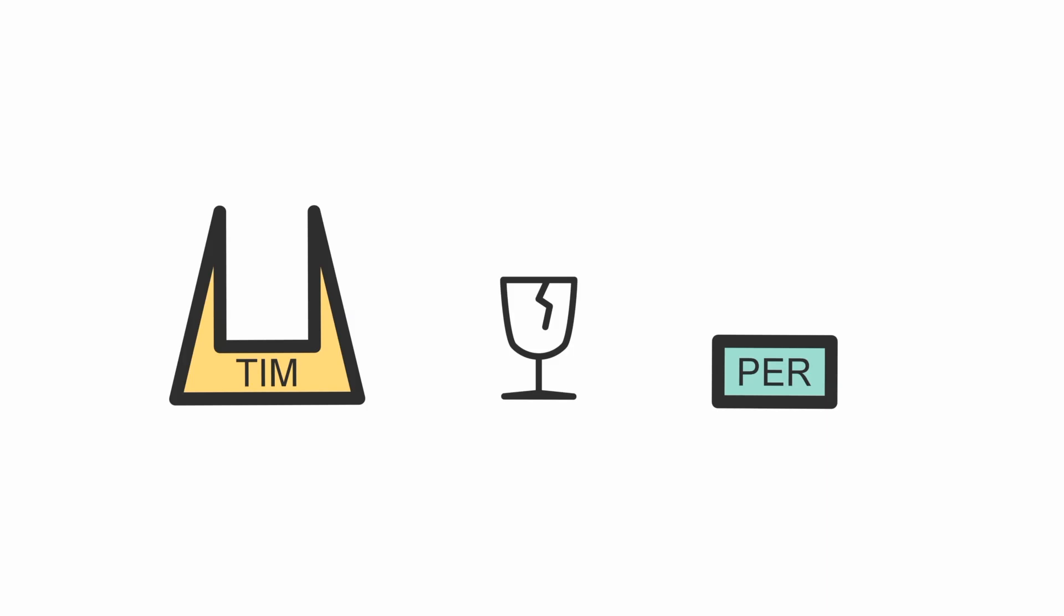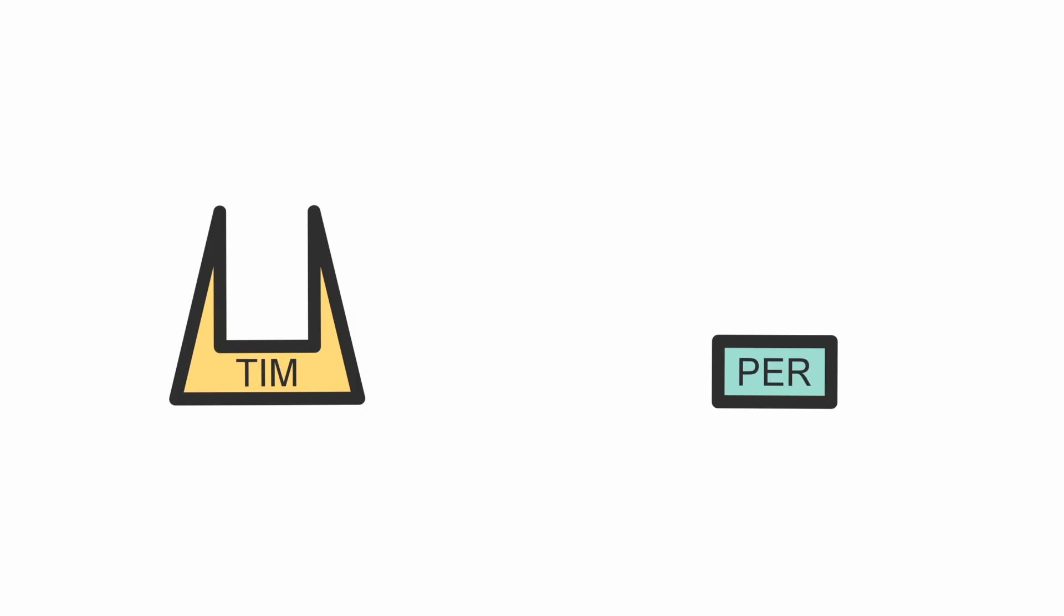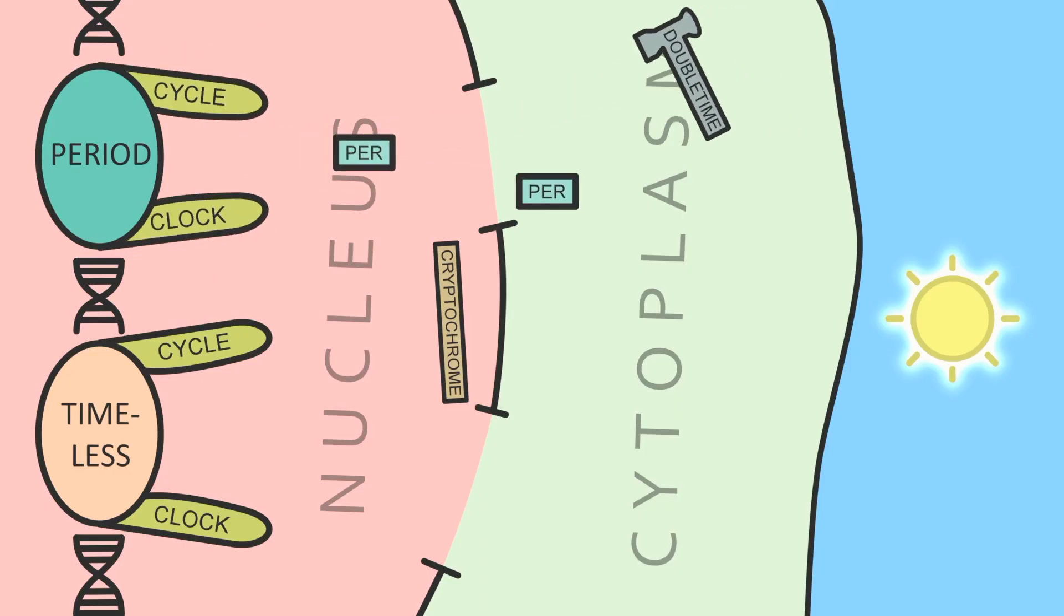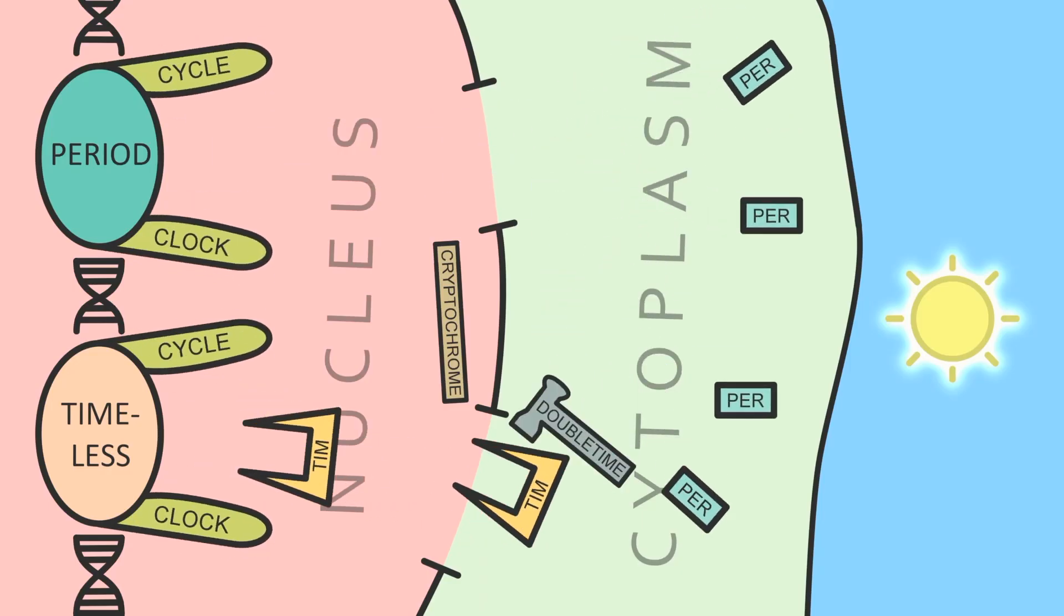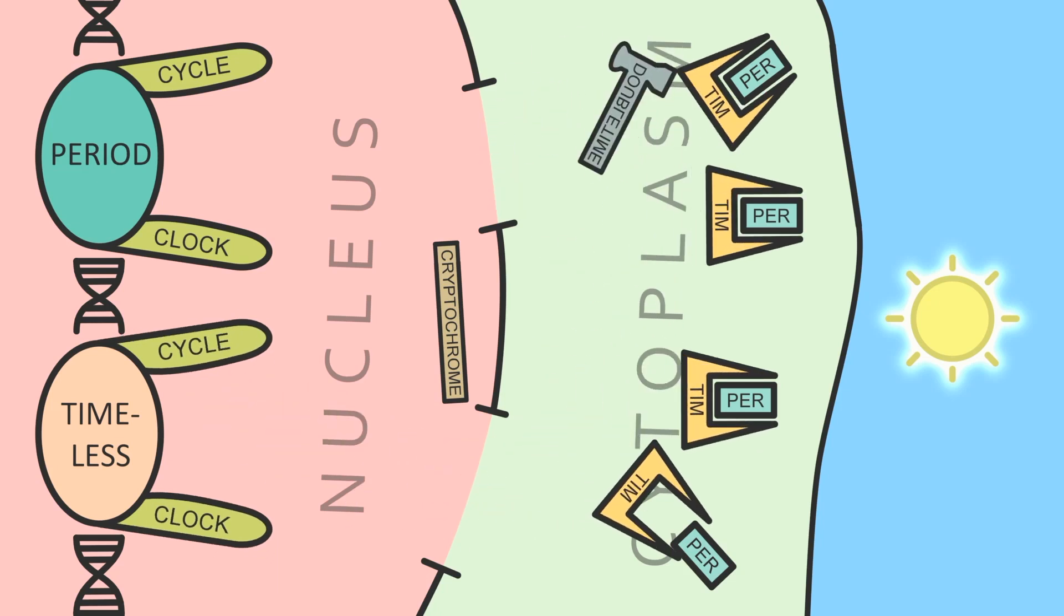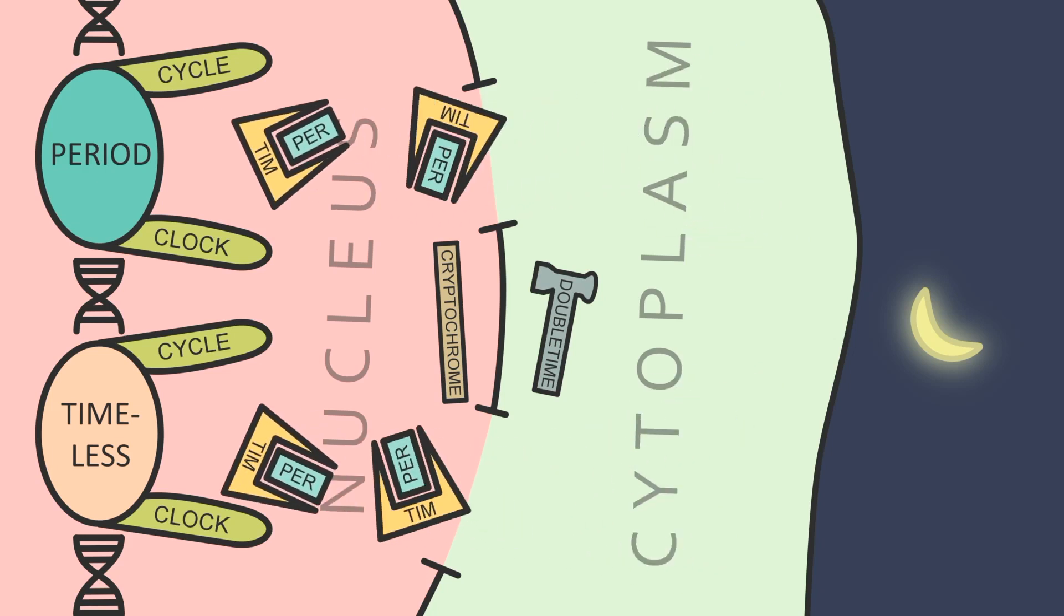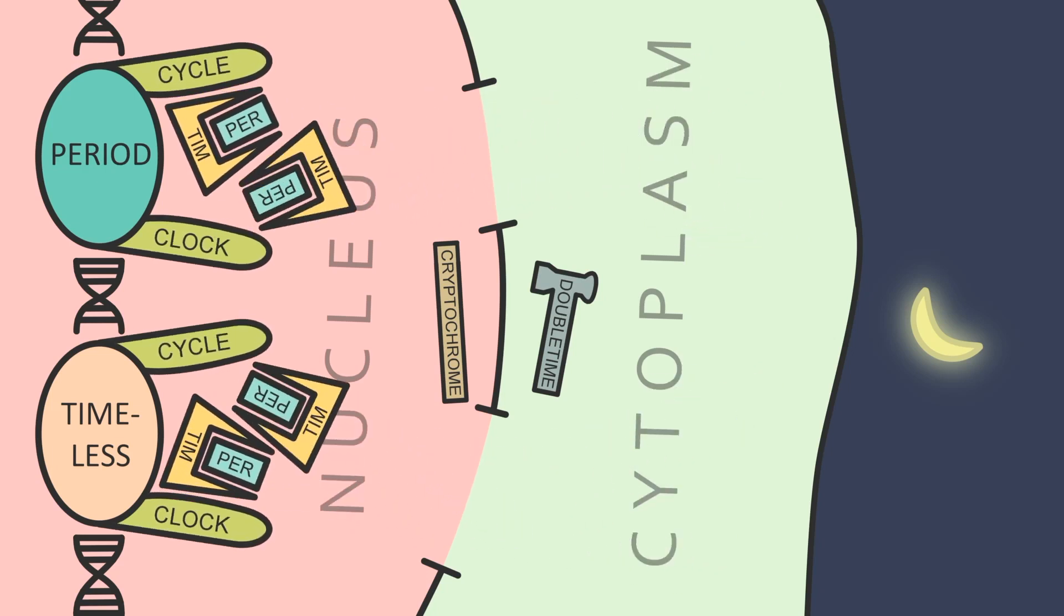But why do PER and TIM break down so easily? It's because of two other proteins, Double Time and Cryptochrome, which are designed to destroy PER and TIM. When PER enters the cytoplasm, Double Time begins breaking it down. However, it can't break TIM or the PER-TIM combo. So eventually, the PER-TIM combo collects and returns to the nucleus, where it stops the TIMELESS and PERIOD genes again.